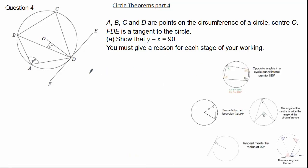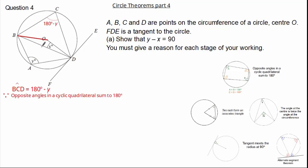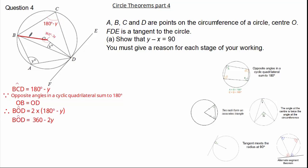Looking at our diagram, you can see we have a radius. It looks a little incomplete, so let's add a second radius. From our diagram you might be able to see that we have a cyclic quadrilateral. Therefore we can work out angle BCD, which is 180 subtract Y. This is because opposite angles in a cyclic quadrilateral will always sum to 180 degrees. We can see OB equals OD, and recognising our circle theorem, the angle at the centre is twice that at the circumference. So 2 multiplied by 180 minus Y gives us angle BOD to be 360 minus 2Y, because the angle at the centre is twice the angle at the circumference.